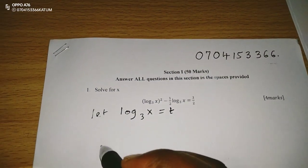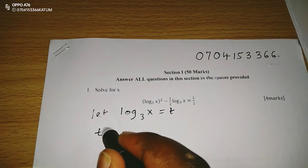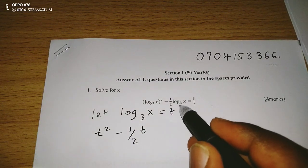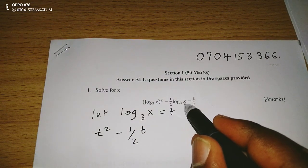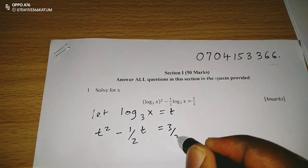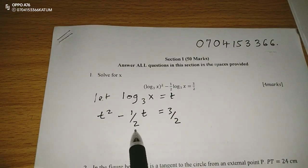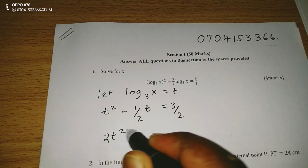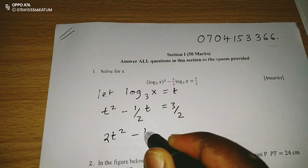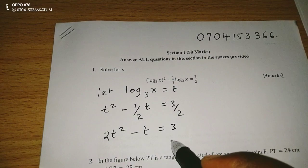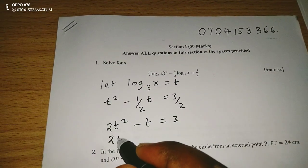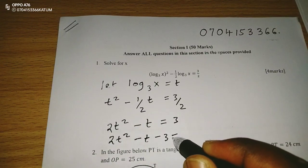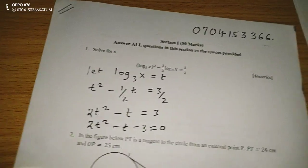So when it is t now, we can talk of t squared minus half t equals 3 out of 2. We can do away with the fractions by multiplying by 2 through, which is common, to have 2t squared minus t is equivalent to 3. And this can resolve to 2t squared minus t minus 3 equivalent to 0. So the equation is now quadratic.